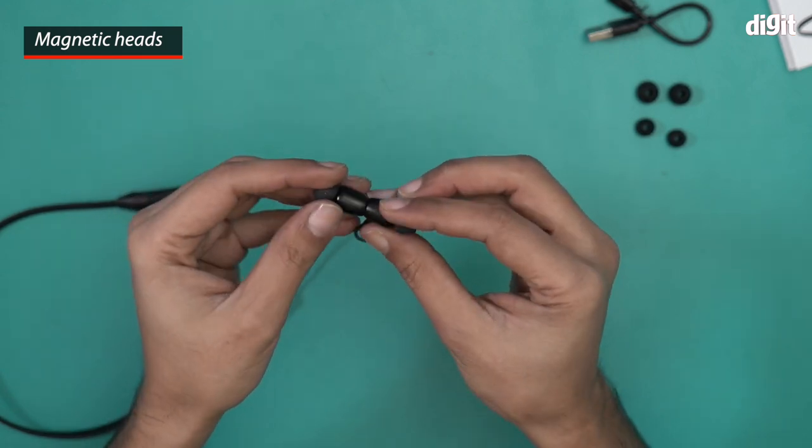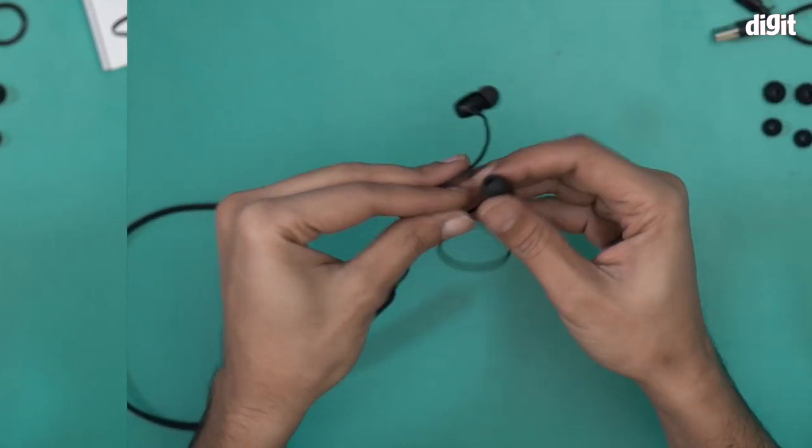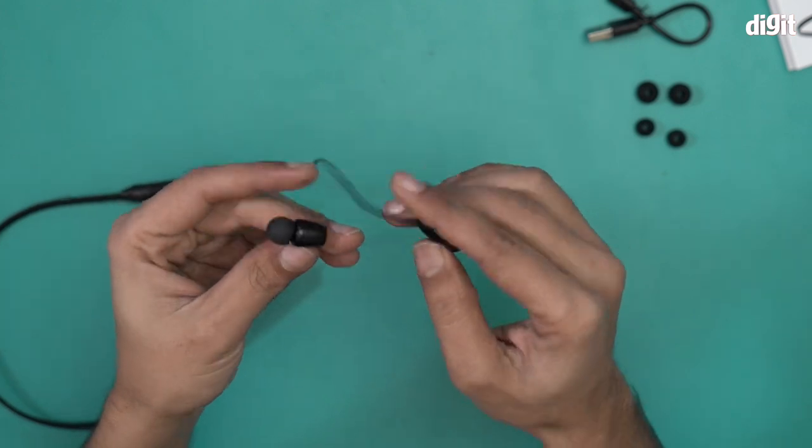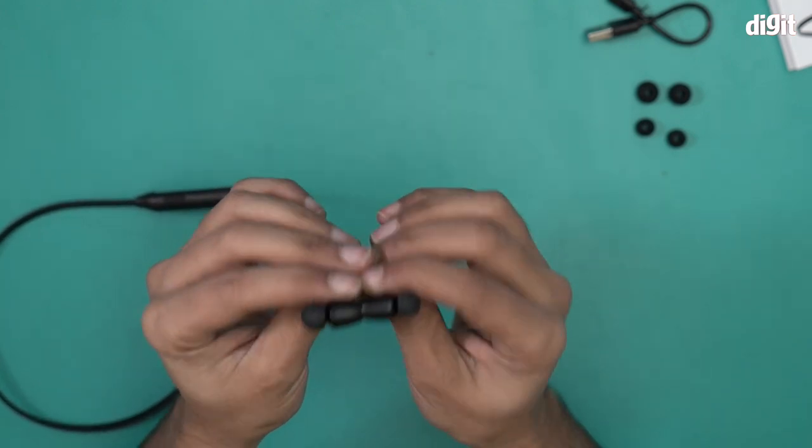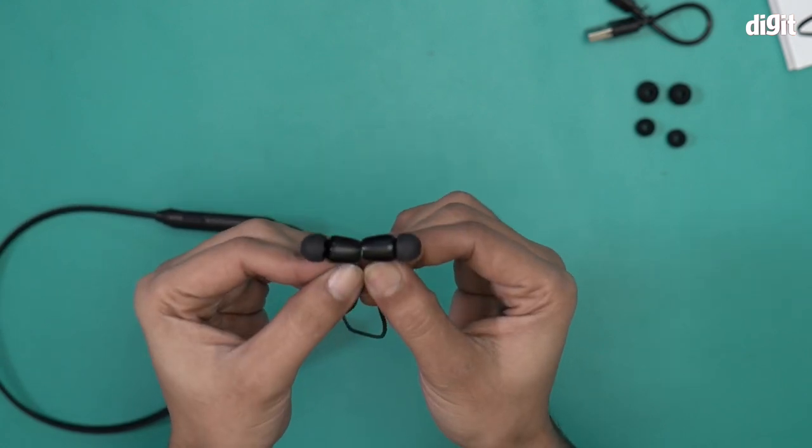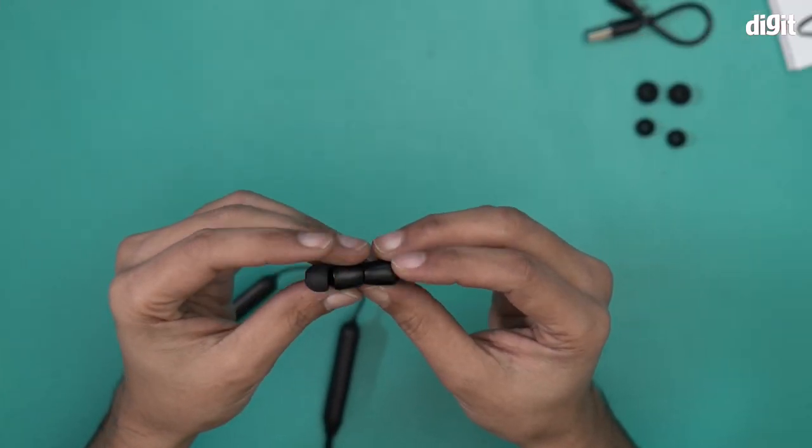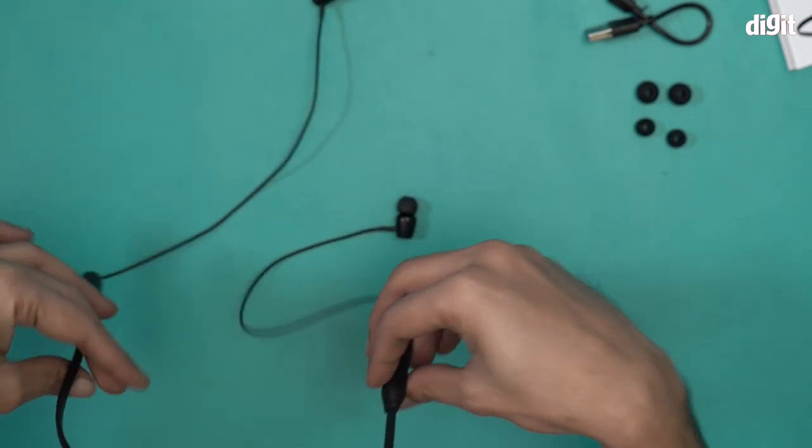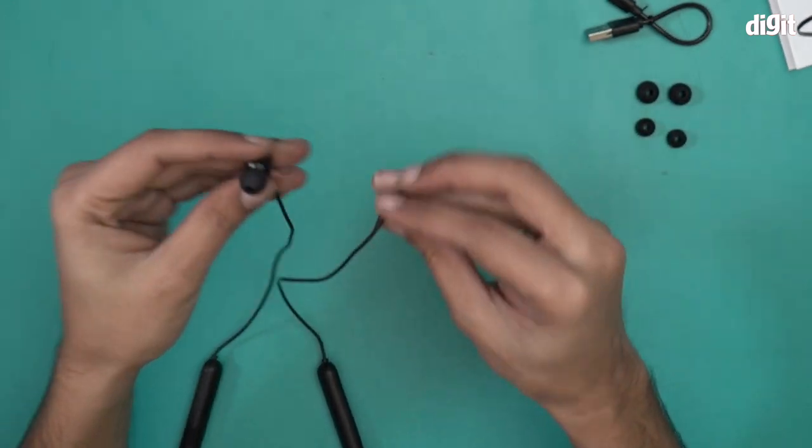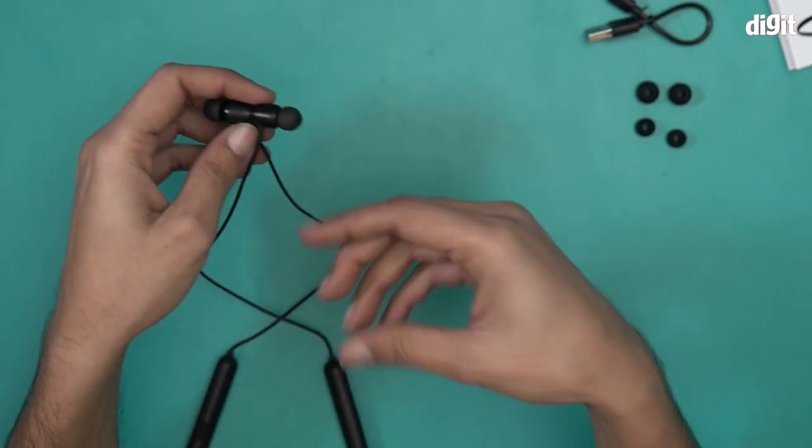So these are the wires, and at the end of the wires you have these heads which are magnetic. These earbuds come with a matte black finish. They're not angular - they do have a little bit of angle but that's not much. The most important thing is that these heads are magnetic, which means that when this neckband is around your head, these magnets will make sure they stay on your neck and don't fall off. What I'm going to do now is pair it with my smartphone and see if this works.